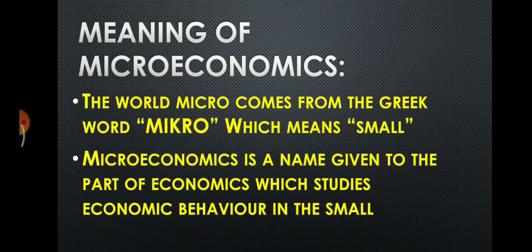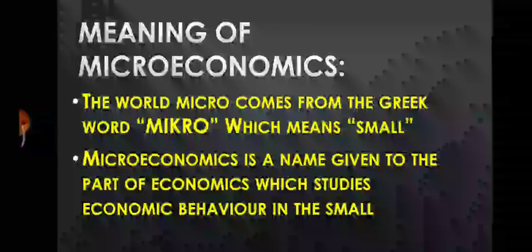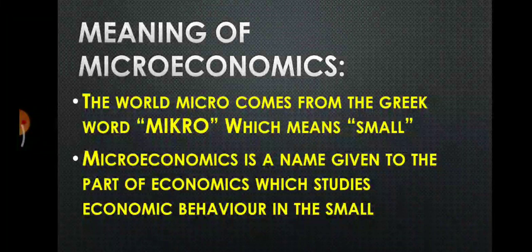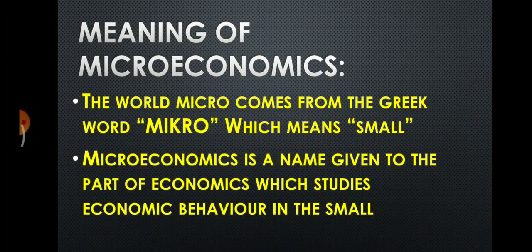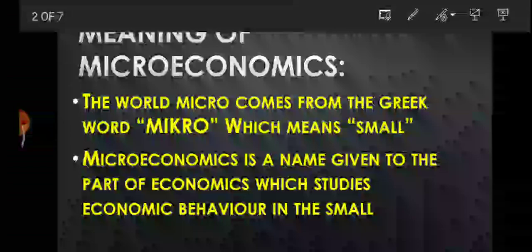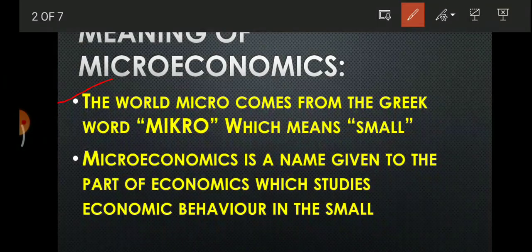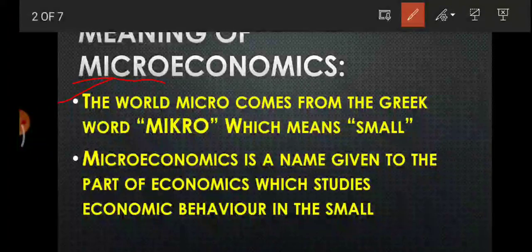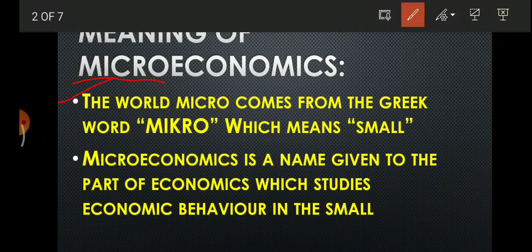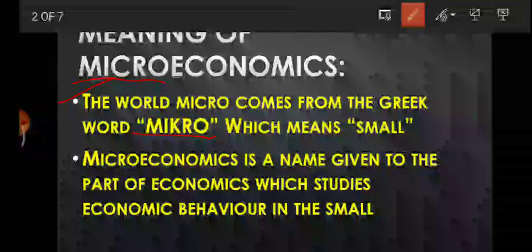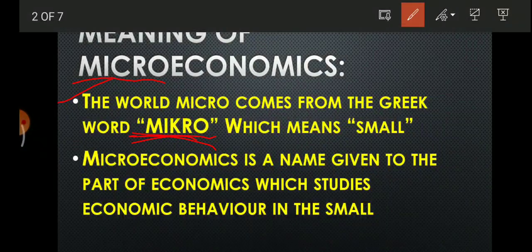First, we have to know what the meaning of microeconomics is. Economics is a branch divided into two parts: microeconomics and macroeconomics. The word microeconomics comes from the Greek word 'mikro' — spelled M-I-K-R-O — which means smallest. Ultimately, the meaning of microeconomics is nothing but the study of small units.